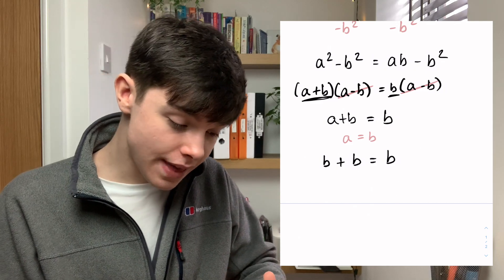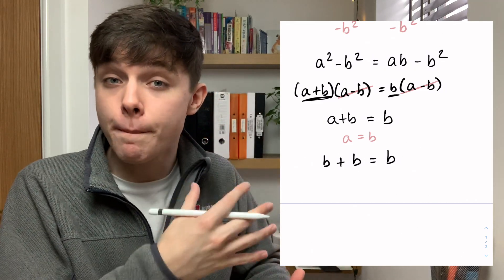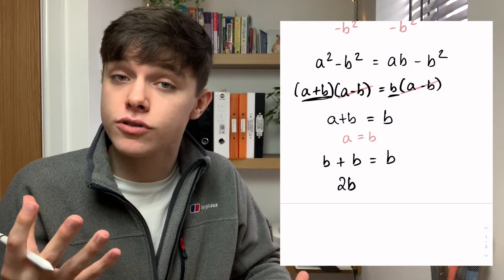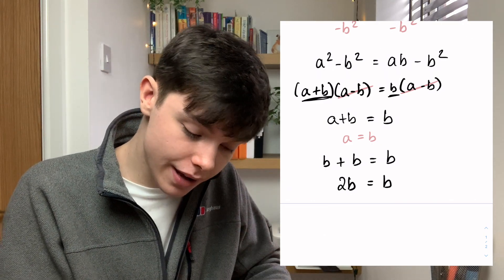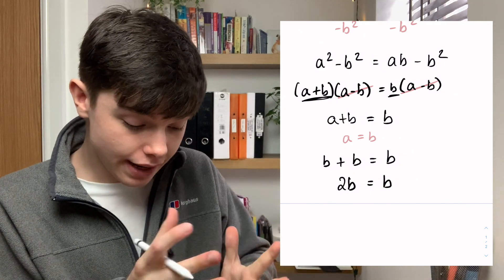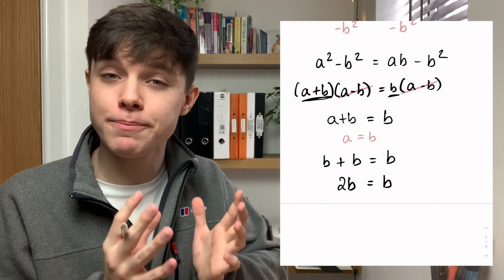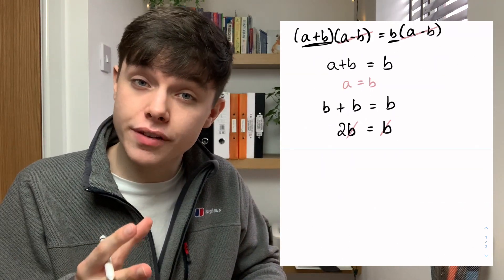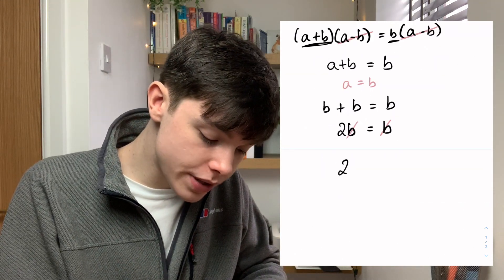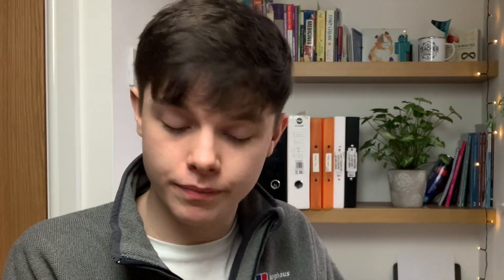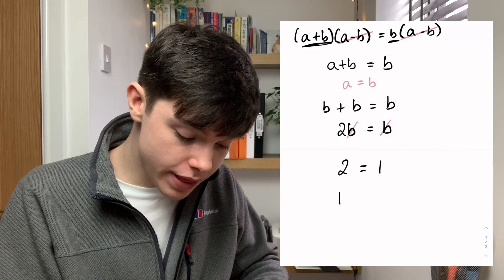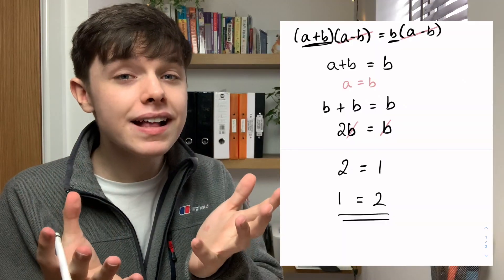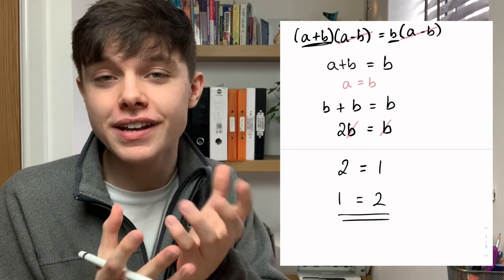I can collect like terms there. On the left hand side we've got b + b, so that's just going to give me 2b. And on the right hand side we've just got b. Now what I can do is I can divide both sides by b. Cancelling out the b from both sides, we'll end up with 2 equals 1. Flip that around, we then get 1 equals 2. And that is the proof that 1 is equal to 2.